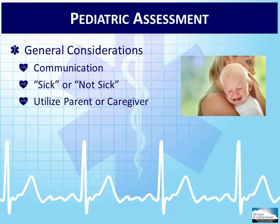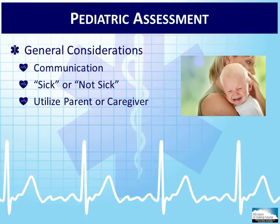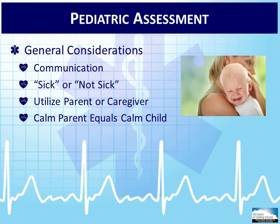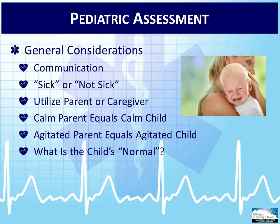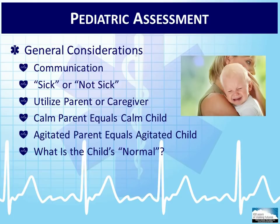It can be important to utilize a parent or caregiver when assessing children, especially if they are younger. Parents and caregivers can provide important information about the child's medical history, signs, possible symptoms, and the events leading up to the emergency. Parents can assist in calming a child to increase cooperativeness. However, parents can sometimes become part of the problem — agitated parents can agitate a child, while calm parents typically tend to relax a child. Caregivers can also help the EMT understand what is normal activity and presentation for the child. Children can change quickly, so it is important to continually assess and reassess interventions and treatments.